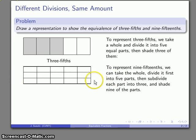So there's my division into 5s, there's my division into 3s, and so now I have 15 equal parts, and I want to shade 9 of those parts. And so there's my 9 fifteenths.